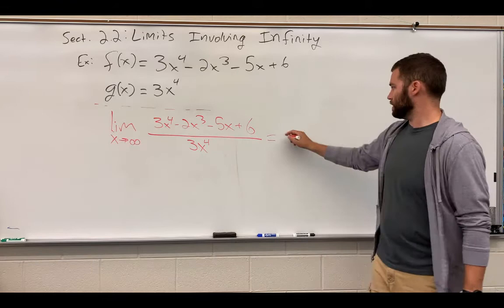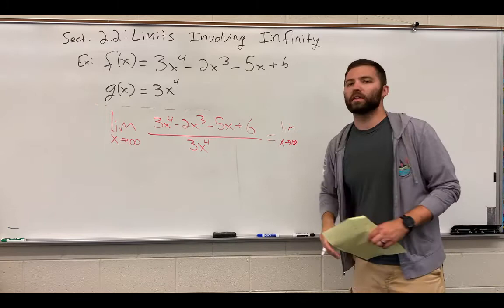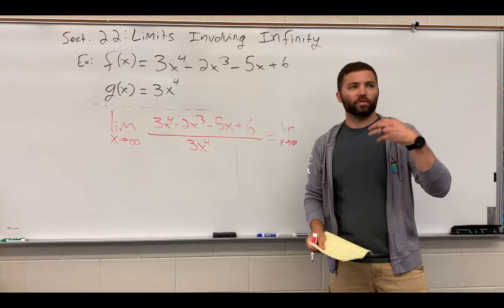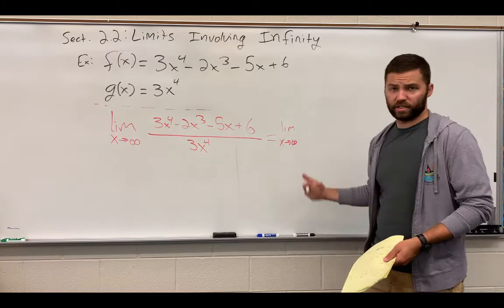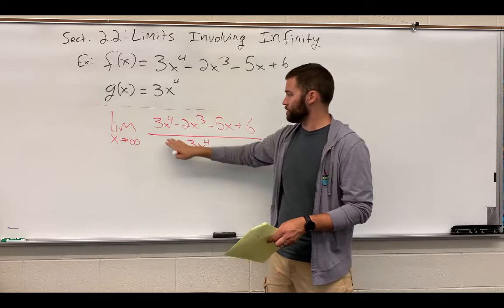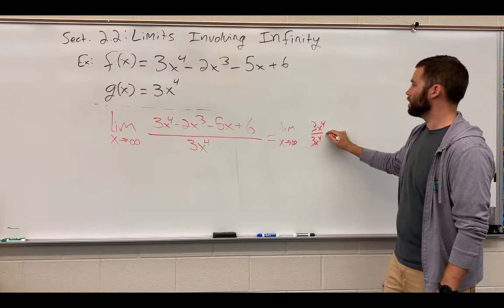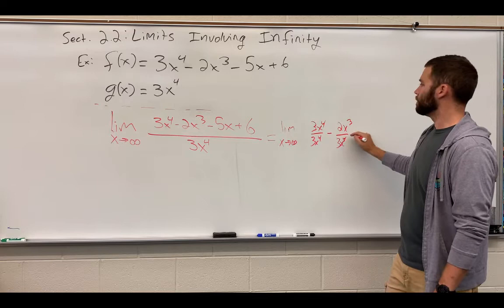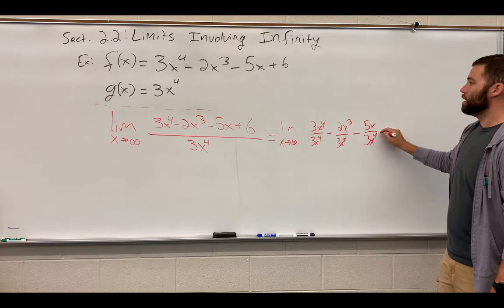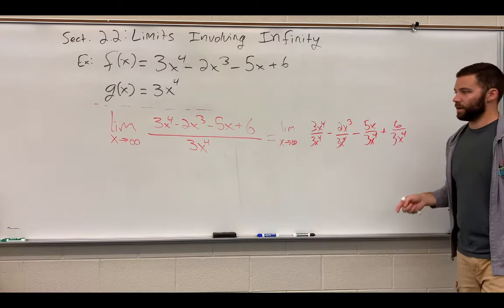And, in general, in mathematics, if you stick around in mathematics long enough and you start doing proofs, you'll find that you want each step or each part of the proof to follow logically from the previous one. You want the reader to be able to clearly see what you did algebraically to get from one thing to the next. So, what we'll do first is we're going to break this one fraction into several fractions. So, we'll take 3x to the fourth divided by 3x to the fourth minus 2x cubed over 3x to the fourth. So, we have 3x to the fourth over 3x to the fourth minus 2x cubed over 3x to the fourth minus 5x over 3x to the fourth plus 6 over 3x to the fourth.